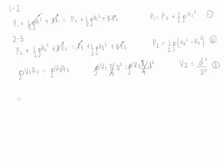Notice that we have three different unknowns: pressure at point two, velocity at point two, and velocity at point three. And now we have three different equations, so we can solve for all the unknowns.